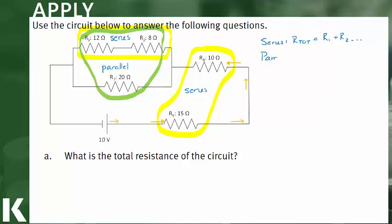And if we are in parallel, we do an inverse add. So 1 over R total would be 1 over R1 plus 1 over R2 and so on.